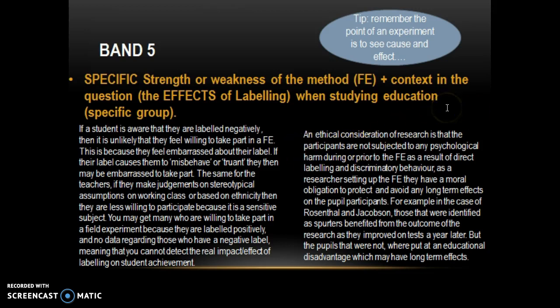The same with this example: 'An ethical consideration is that participants should not be subjected to psychological harm during or prior to the field experiment as a result of direct labelling and discriminatory behaviour. As a researcher setting up the field experiment, they have a moral obligation to protect participants and avoid any long-term effects. For example, in the case of Rosenthal and Jacobson, those identified as spurters benefited from the outcome of the research as they improved on tests a year later, but pupils who were not identified were put at an educational disadvantage, which might have had a long-term effect.' Here there is a clear issue specific to a field experiment, successful application of the Rosenthal and Jacobson study, and discussion of the effects of labelling — all of which pushed it to Band 5.